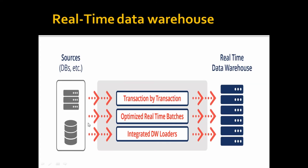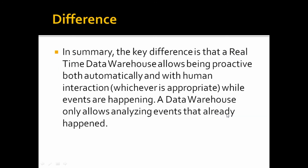In a real-time data warehouse, the main difference is that it allows being proactive both automatically and with human interaction while events are happening. In a traditional data warehouse, the system only allows analyzing events that already happened.